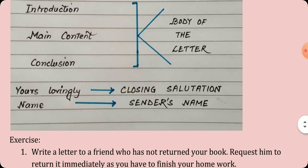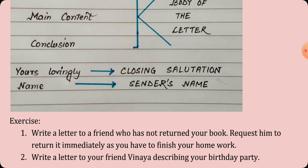I have given you two questions to be written down in your English language copy. Number one: Write a letter to a friend who has not returned your book, requesting him to return it immediately as you have to finish your homework. Number two: Write a letter to your friend Vinaya describing your birthday party. Students, I hope you have understood the format of both formal and informal letters. Please note the formats in your English language copy and solve these four questions. Thank you. Om Namah Shivaya.